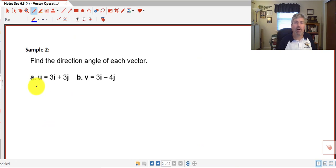So find the direction angle of each vector. In a, vector u is 3i plus 3j. So to find our tangent of theta, we would do sine over cosine, which is simply 3 over 3, which is the same thing as our b over our a. So it's equal to 1. Think about your unit circle. The tangent of theta is equal to 1 at 45 degrees.